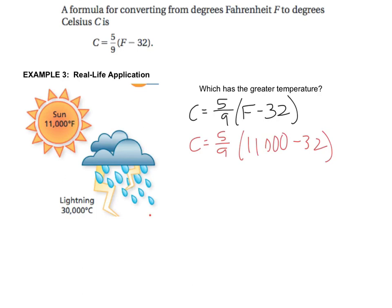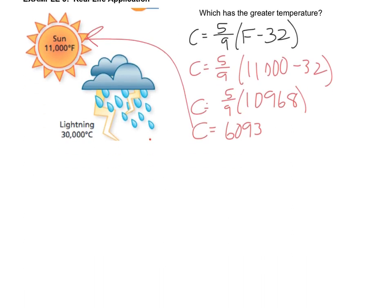I'm going to get my trusty calculator out, and let's do it. 11,000 minus 32 is 10,968 times 5 ninths. That gives me a Celsius temperature for the sun as 6,093, and I'm rounding because it's 0.3 repeating. So that represents the sun. Clearly, lightning is significantly hotter because it's 30,000 degrees Celsius. So the lightning is going to be the hotter temperature.